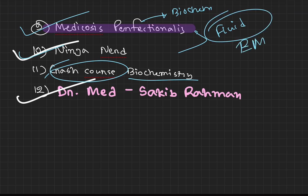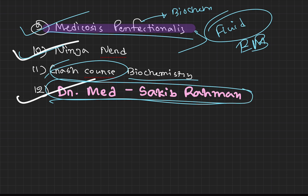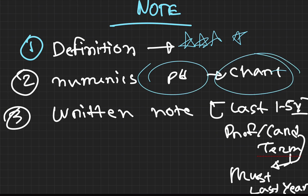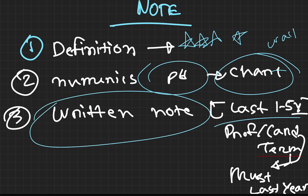For fluid and electrolyte balance, Medicosis Perfectionalis is very helpful. When you study, follow this approach: on the first day, go through definitions. If you have numericals, pictures, or charts, do a revision. Then for the last 5 years, go through Prof questions, Card questions, and Term questions. The must-do last-year questions are very important. If you want a quick rapid revision, it's a good — in fact the best — choice.